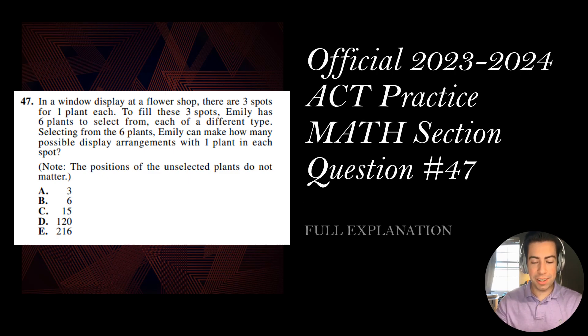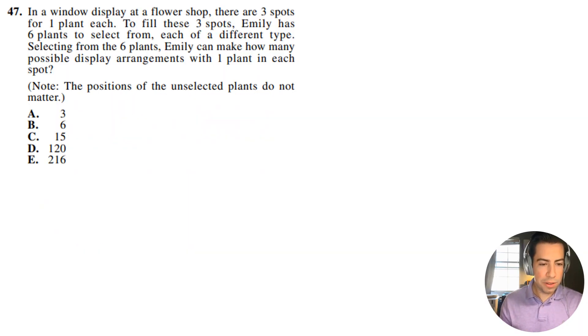All right guys, question number 47. Let's get right into it. In a window display at a flower shop, there are three spots for one plant each. To fill these three spots, Emily has six plants to select from, each of a different type. Selecting from the six plants, Emily can make how many possible display arrangements with one plant in each spot. Note the positions of the unselected plants do not matter.